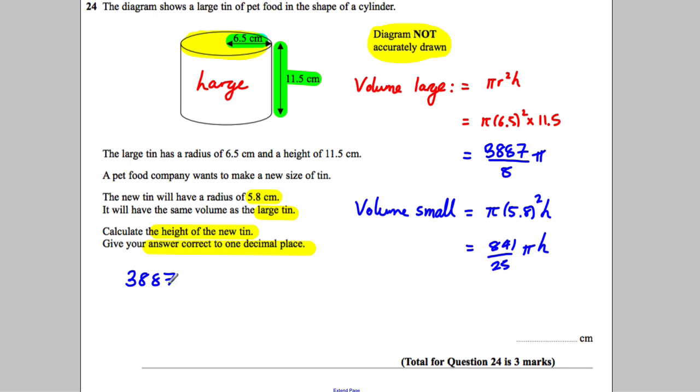We can divide both sides by π, they cancel. Therefore h is going to be equal to 3887 over 8 divided by 841 over 25.